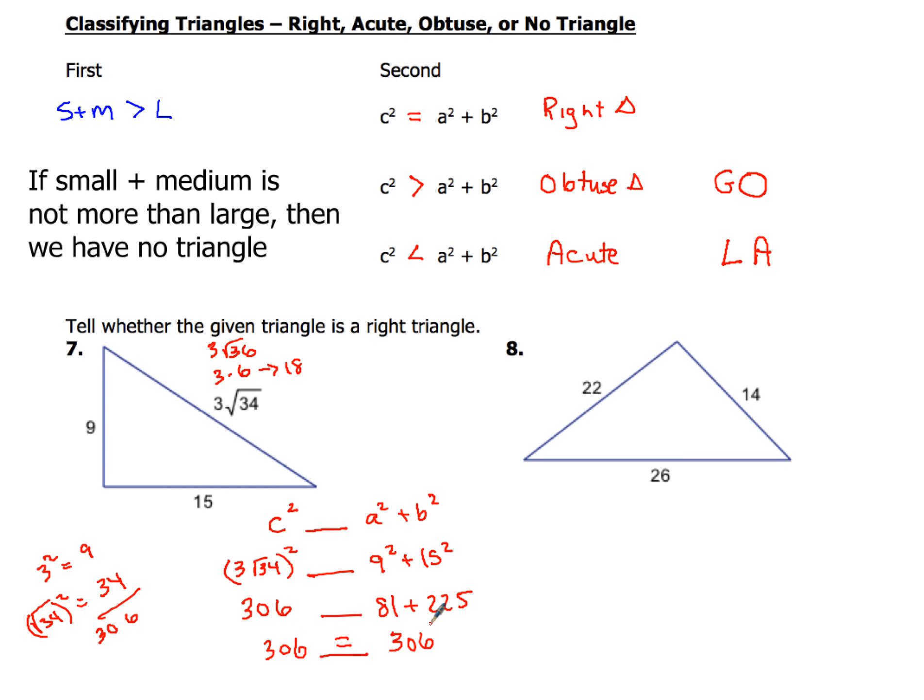So what do we know about 306 and 306? They're equal. So that means this triangle is a right triangle. So we just write, right triangle. We done.